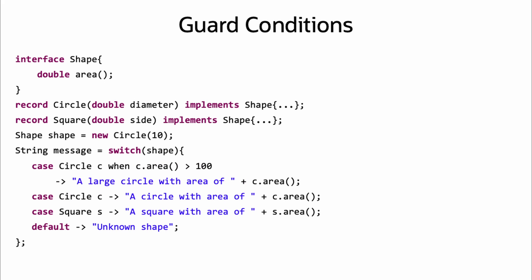As a part of adding Pattern Matching to Switch, null can also be a case label, allowing for easier handling of null conditions instead of having to prefix a switch with a null check or getting a NullPointerException.